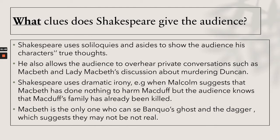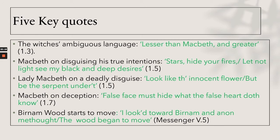Shakespeare uses soliloquies and asides to show the audience characters' true thoughts, and allows the audience to overhear private conversations such as Macbeth and Lady Macbeth's discussion about murdering Duncan. He uses dramatic irony — for example, when Malcolm suggests Macbeth has done nothing to harm Macduff, but the audience knows Macduff's family has already been killed. Macbeth is the only one who can see Banquo's ghost and the dagger, suggesting they may not be real. Five key quotes: the witches' ambiguous language — 'Lesser than Macbeth and greater.' Macbeth — 'Stars hide your fires, let not light see my black and deep desires.' Lady Macbeth — 'Look like the innocent flower, but be the serpent under it.' Macbeth — 'False face must hide what the false heart doth know.' Birnam Wood moving — 'I looked toward Birnam and anon methought the wood began to move.'